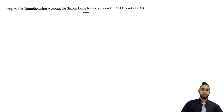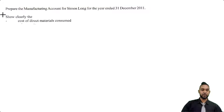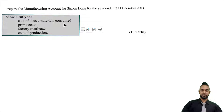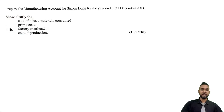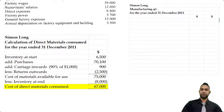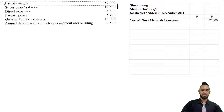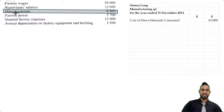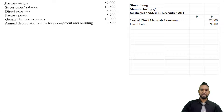Part B asks us to prepare the manufacturing account for Simon Long for the year ended 31st December 2011, showing clearly the cost of direct materials consumed, prime costs, factory overheads, and cost of production. We pull the $67,000 for direct materials consumed. Factory wages, unless otherwise stated, are direct, and we have direct expenses of $6,800. Adding factory wages of $59,000 and direct expenses of $6,800 to direct materials consumed gives us total prime cost of $132,800.